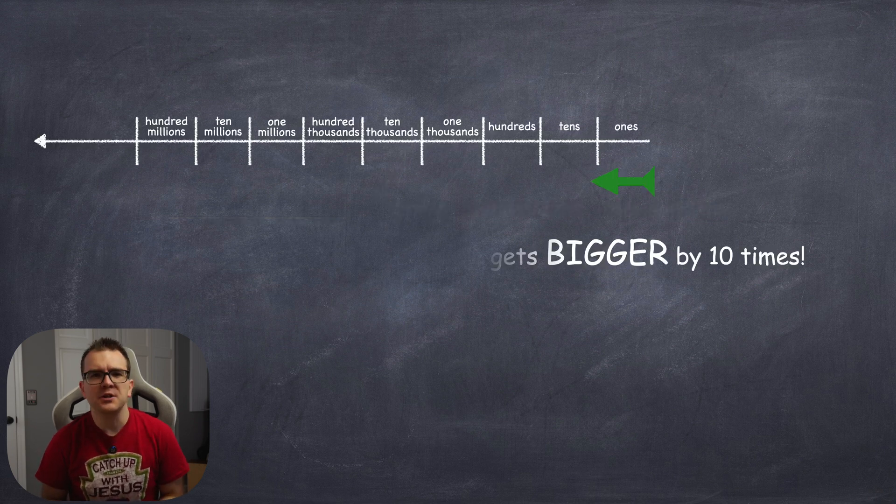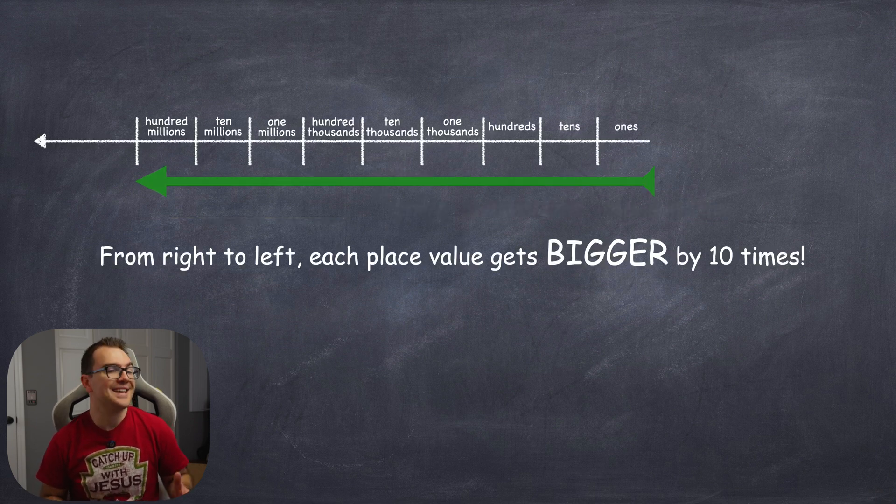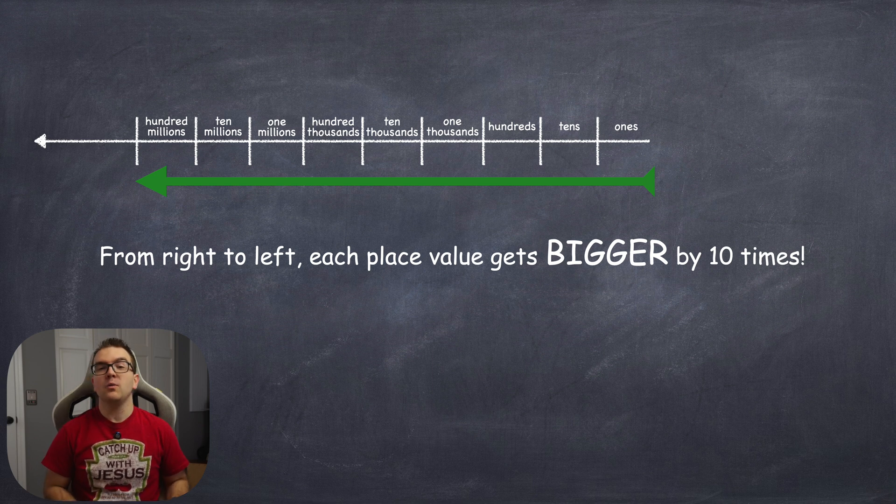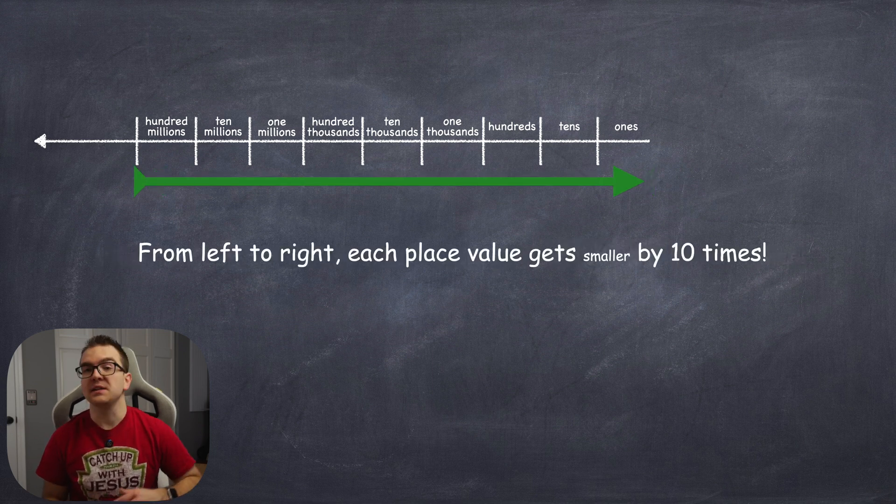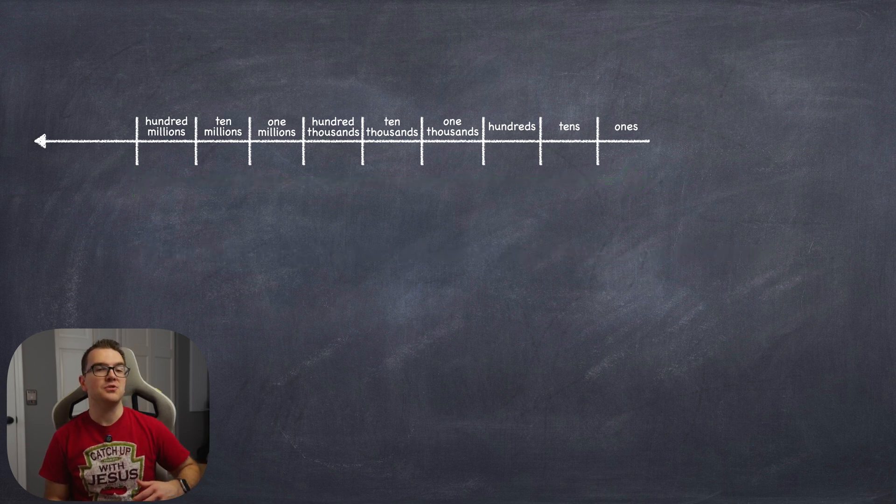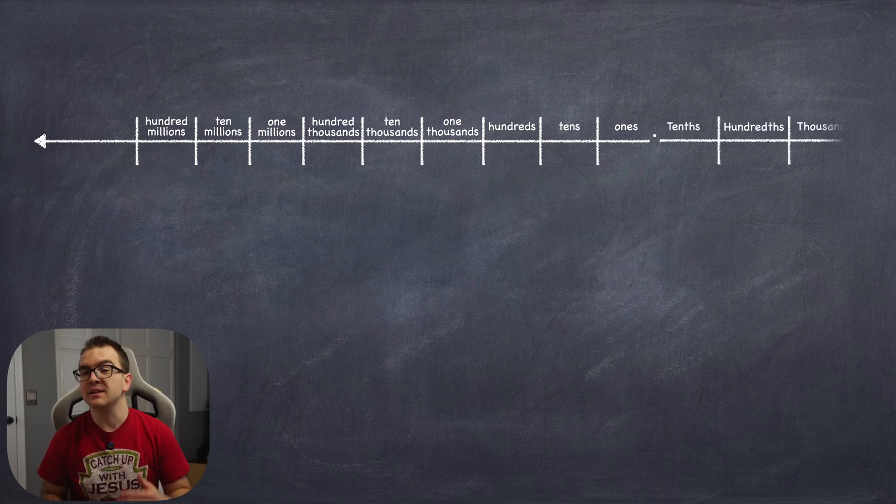Well, remember how in place value each place to the left gets bigger by 10 times? Well, when we move to the right, each place gets smaller by 10 times. This also applies as you move to the right and left of the decimal point.